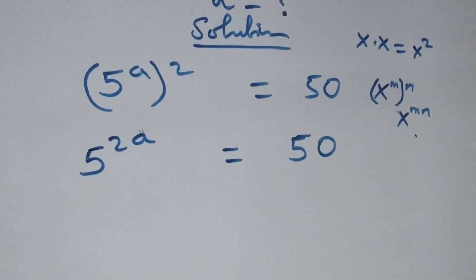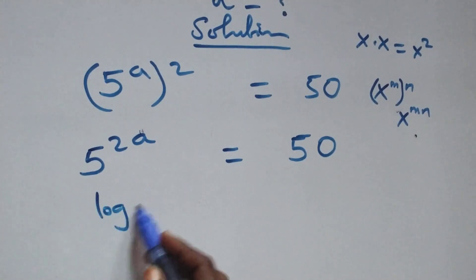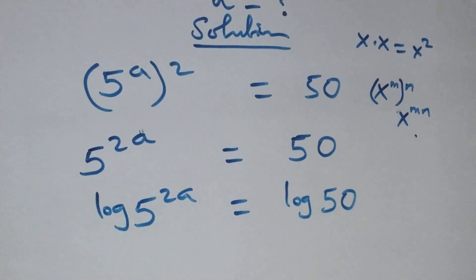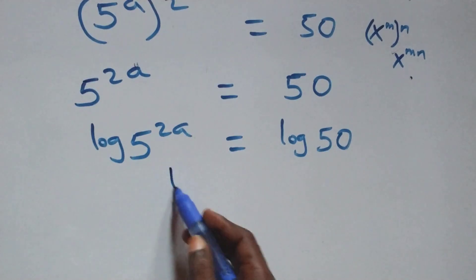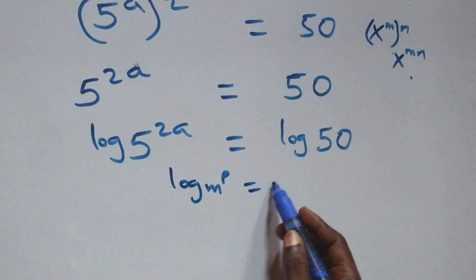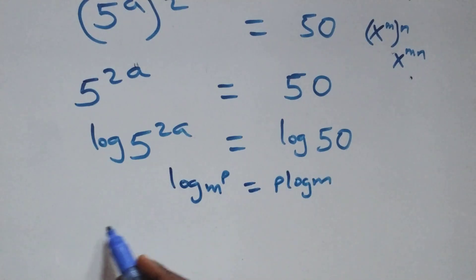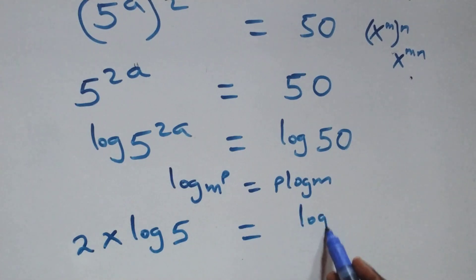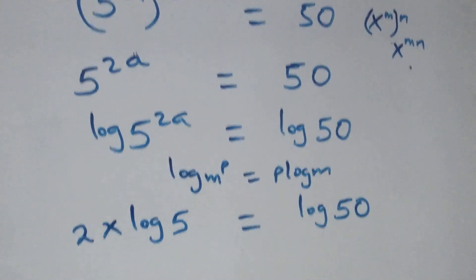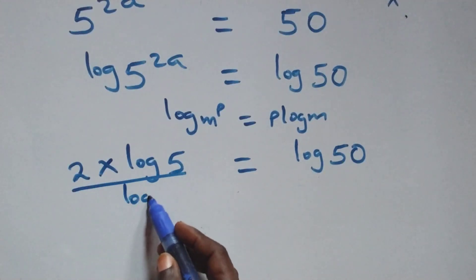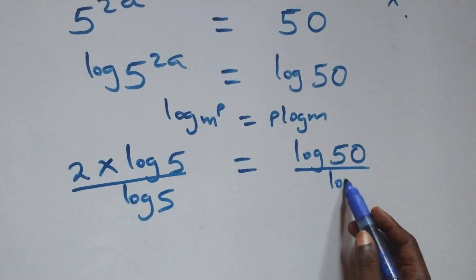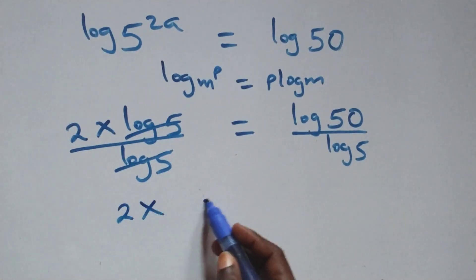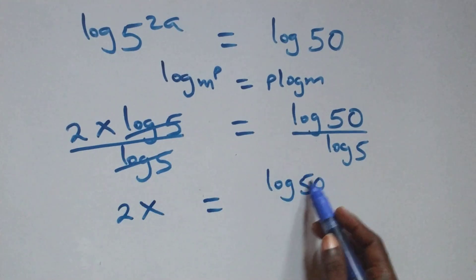The next step: we take the log on both sides. On the left side we have log of 5 raised to power 2x equals log 50 on the right side. Here we apply the power rule of logarithm: log of m raised to power p equals p times log m. So we have 2x log 5 equals log 50. Next, divide both sides by log 5 — log 5 cancels — and we have 2x equals log 50 over log 5.